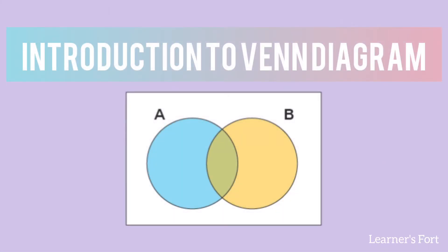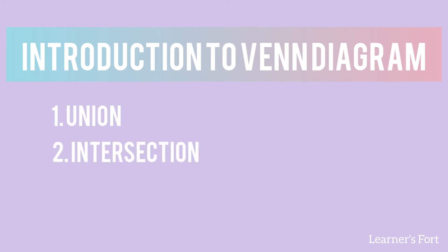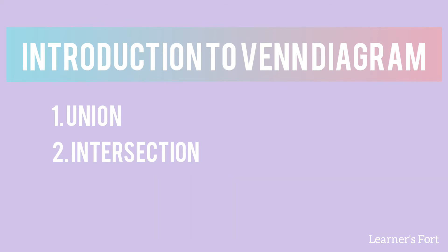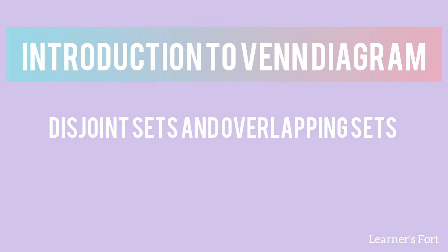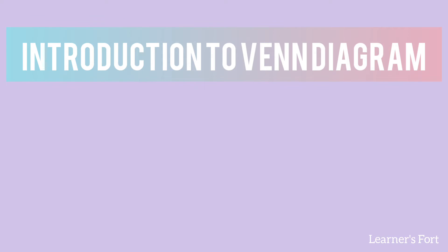Hello students, welcome back to my channel. Today we're going to learn about the Venn diagram. Before continuing, I have already uploaded videos on the four operations of sets: union, intersection, difference of sets, and complement of a set. I've also uploaded videos on disjoint sets, overlapping sets, universal set, and subsets. If you have any confusion in any of these topics, you can go and check them out.